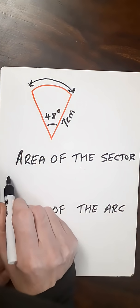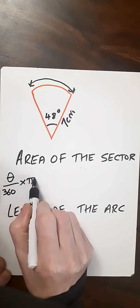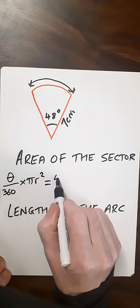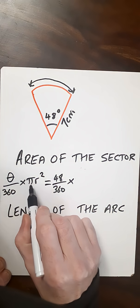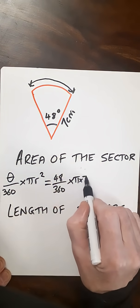So area of a sector in degrees is theta over 360 times pi r squared. Taking the values we've got there, our theta is 48, divide that by 360, multiply that by pi and the radius squared, which is 7 squared.